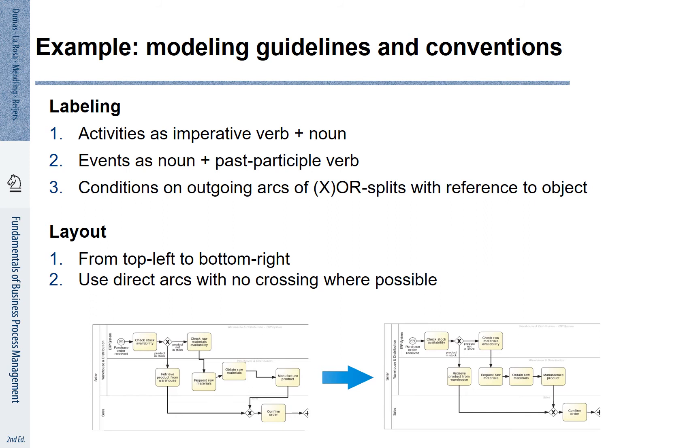Let's first look at the labeling of the activities and events in the process. There are some conventions that have been established to make the labels effective. Our recommendation is that activities should be written with an imperative verb and a corresponding noun. Events should also refer to a noun and a past participle verb. We should also write conditions on the outgoing arcs of OR and XOR splits with a reference to a particular object of the process.